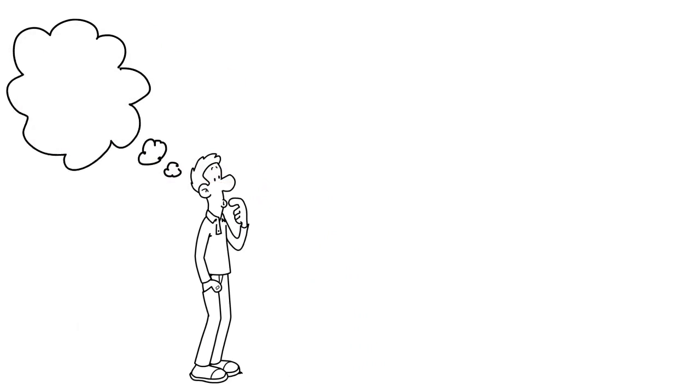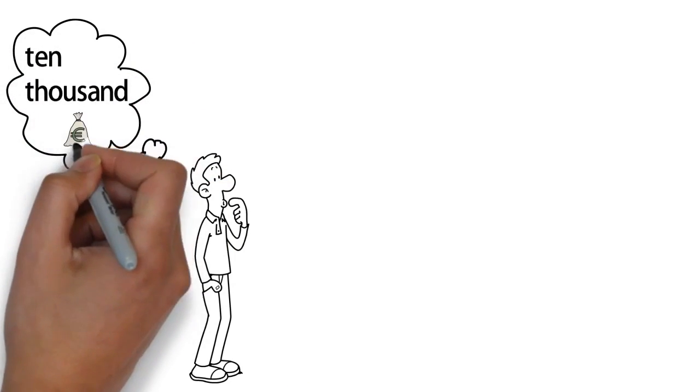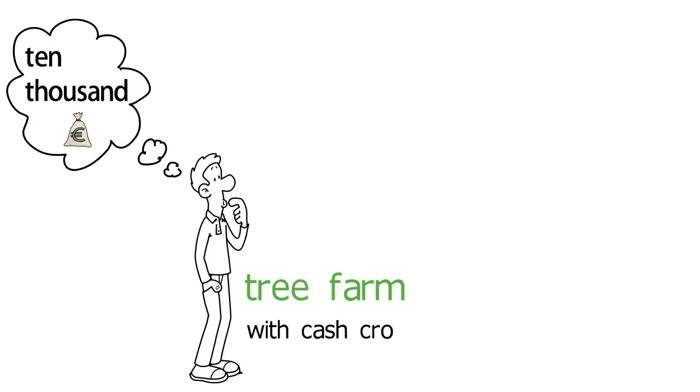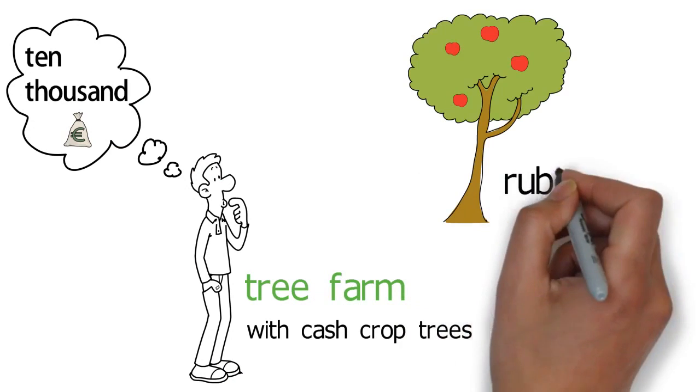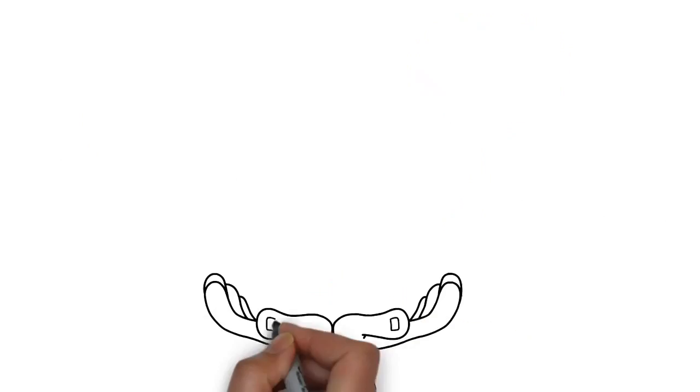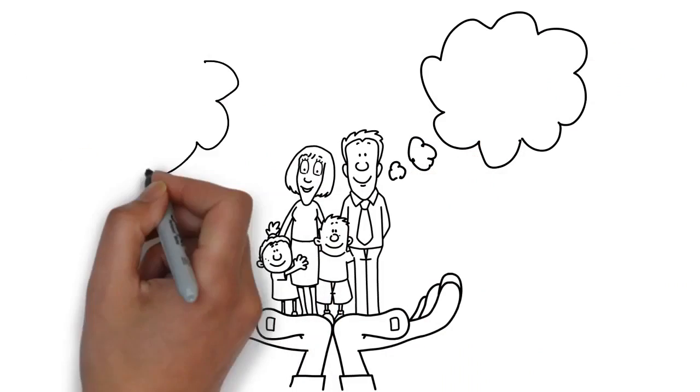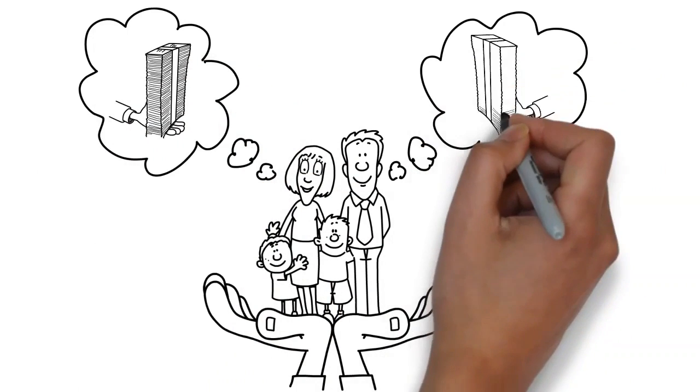Did you know that if you would have invested 10,000 euros 20 years ago in creating a tree farm with cash crop trees like fruit, rubber, or mahogany, you and your family would be able to live on the cash flow from it today and for generations to come.